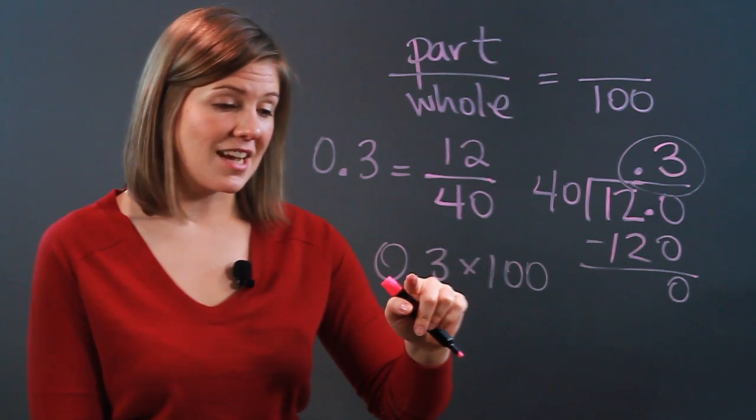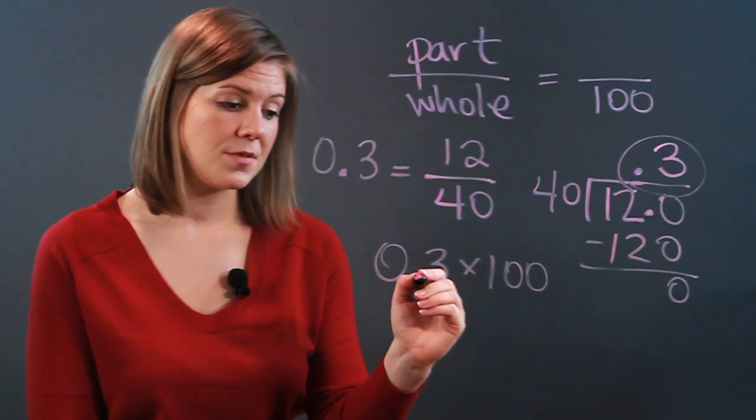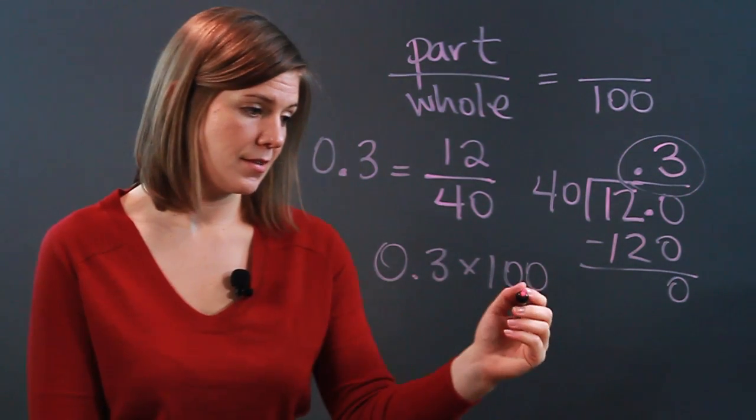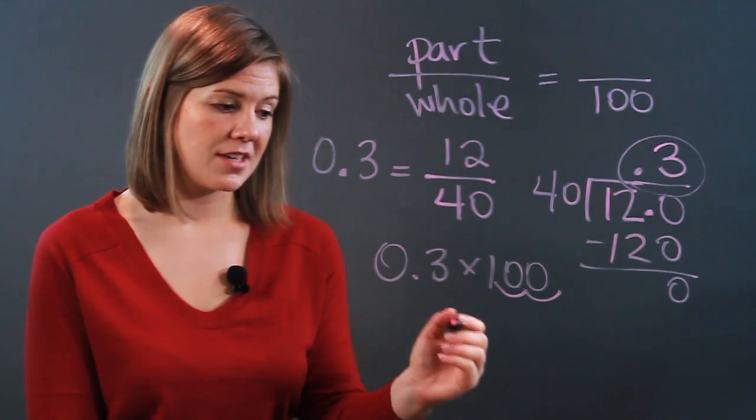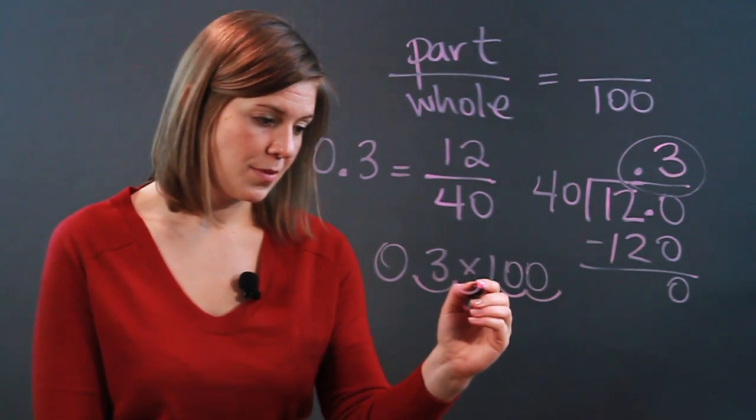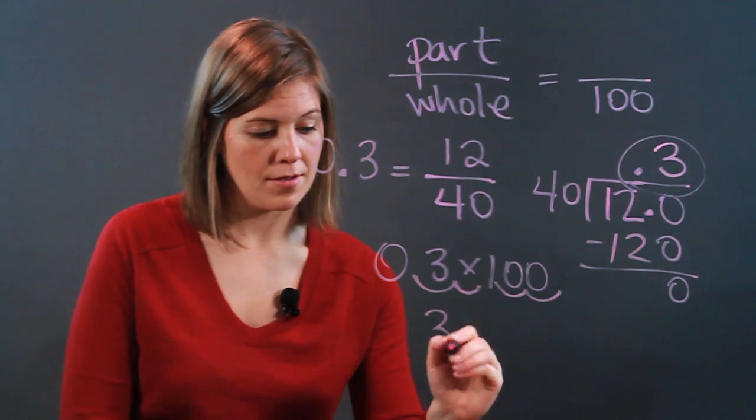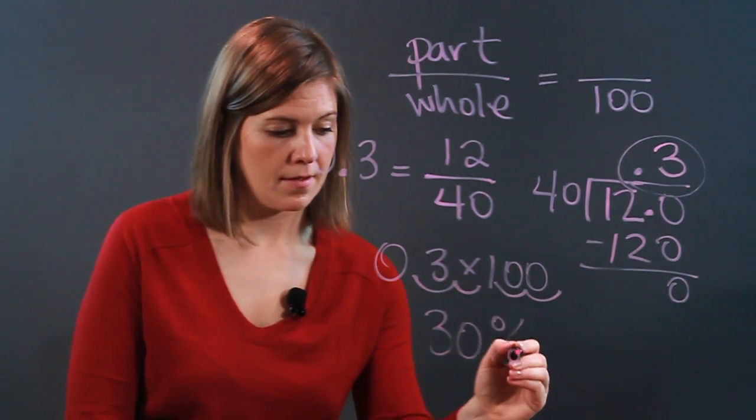When we're dealing with decimals, it's really easy to see that 100 just moves my decimal over two place values. So I've got 1, 2 place values to get me to 1, and I've got 1, 2 place values to get me to 30%.